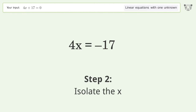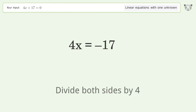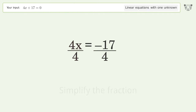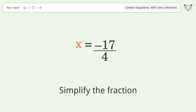Isolate the x by dividing both sides by 4 and simplify the fraction. The final result is x equals negative 17 over 4.